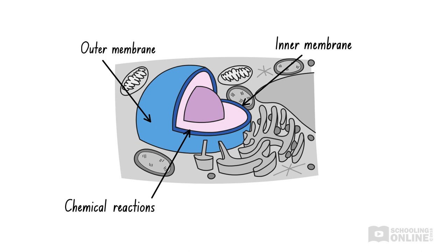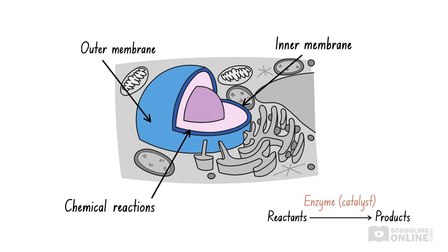Inside membrane-bound organelles, such as the nucleus, the enzymes and reactants required for each reaction can be present in high concentrations, allowing these reactions to occur faster. An enzyme is a biological catalyst, so it speeds up chemical reactions inside cells. Therefore, membranes allow organelles to operate more efficiently.